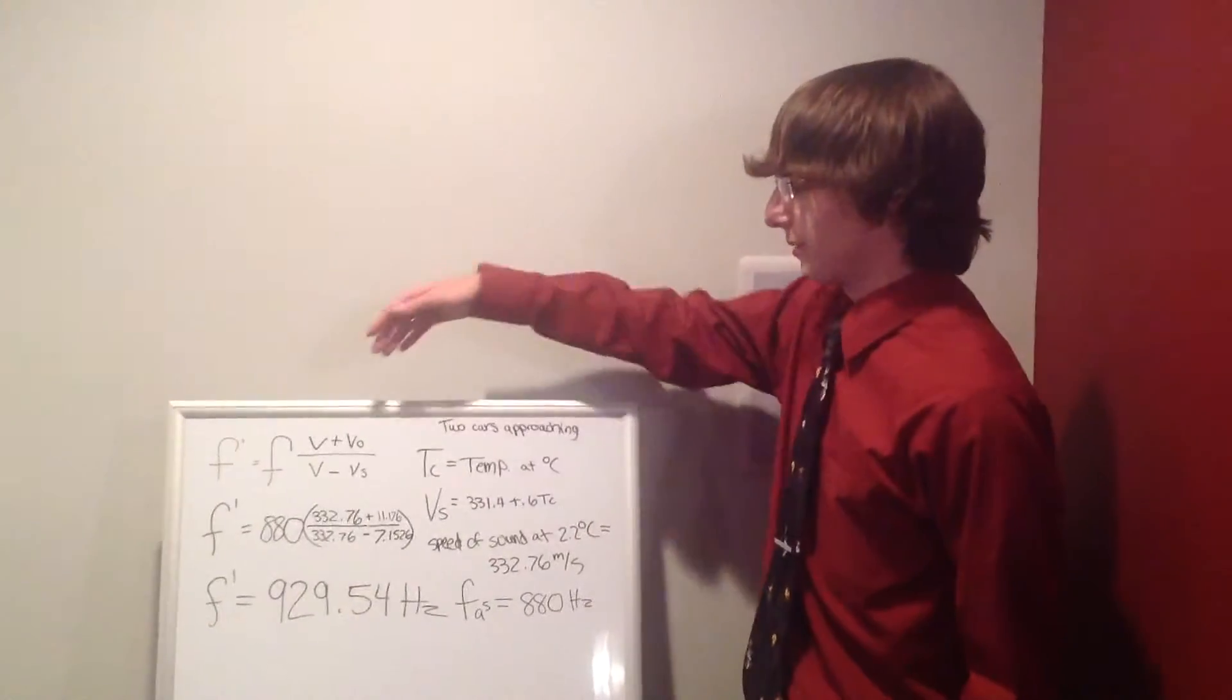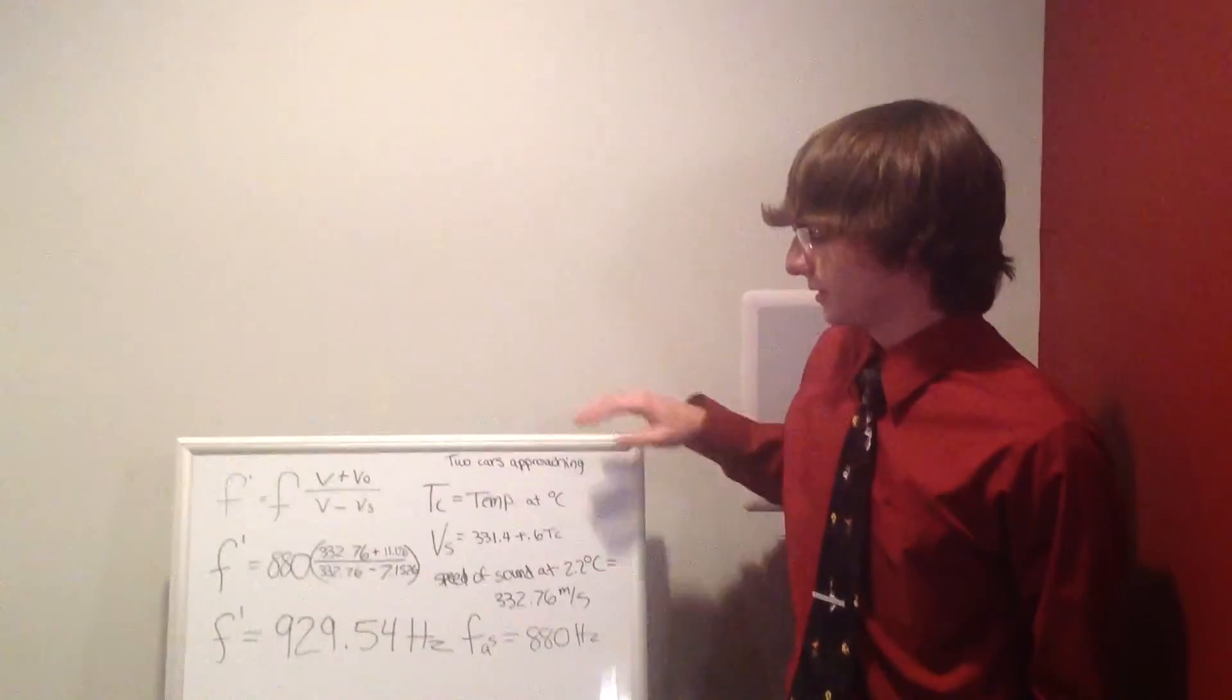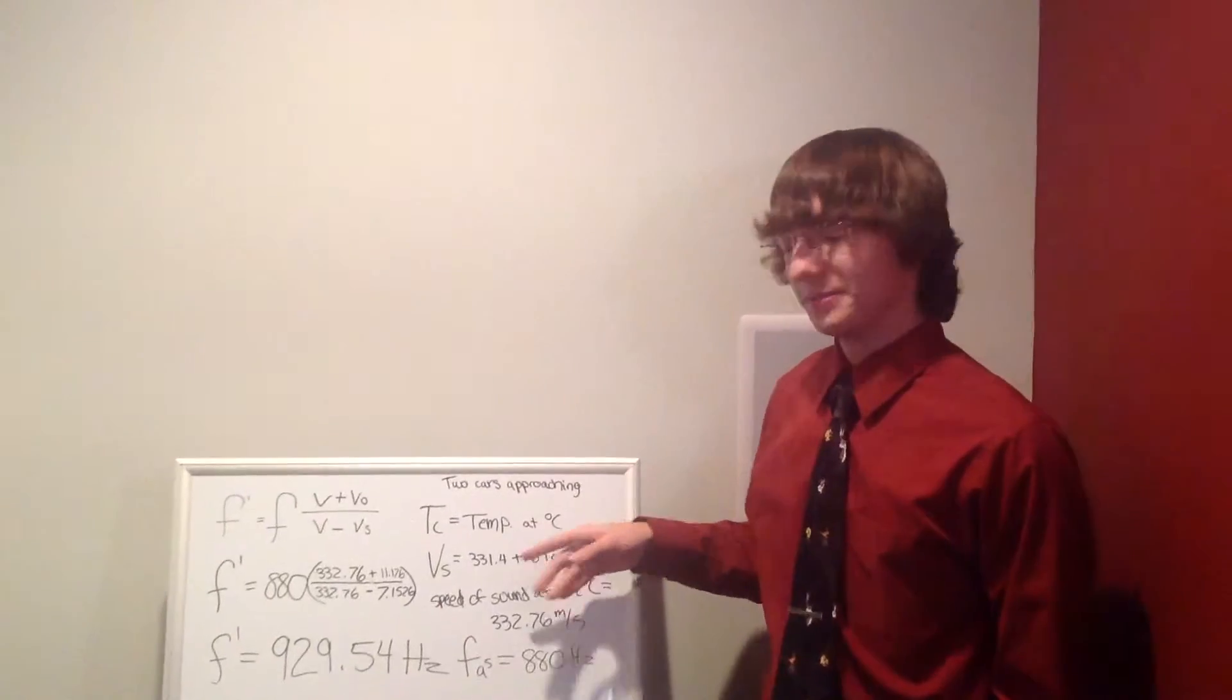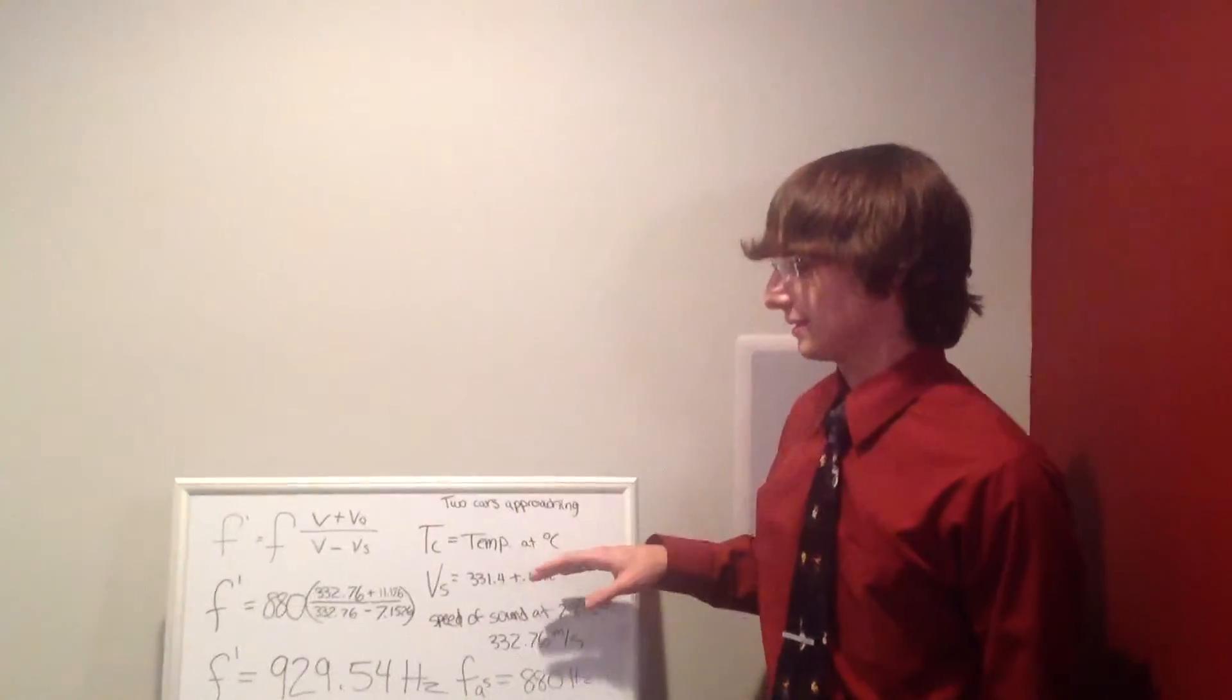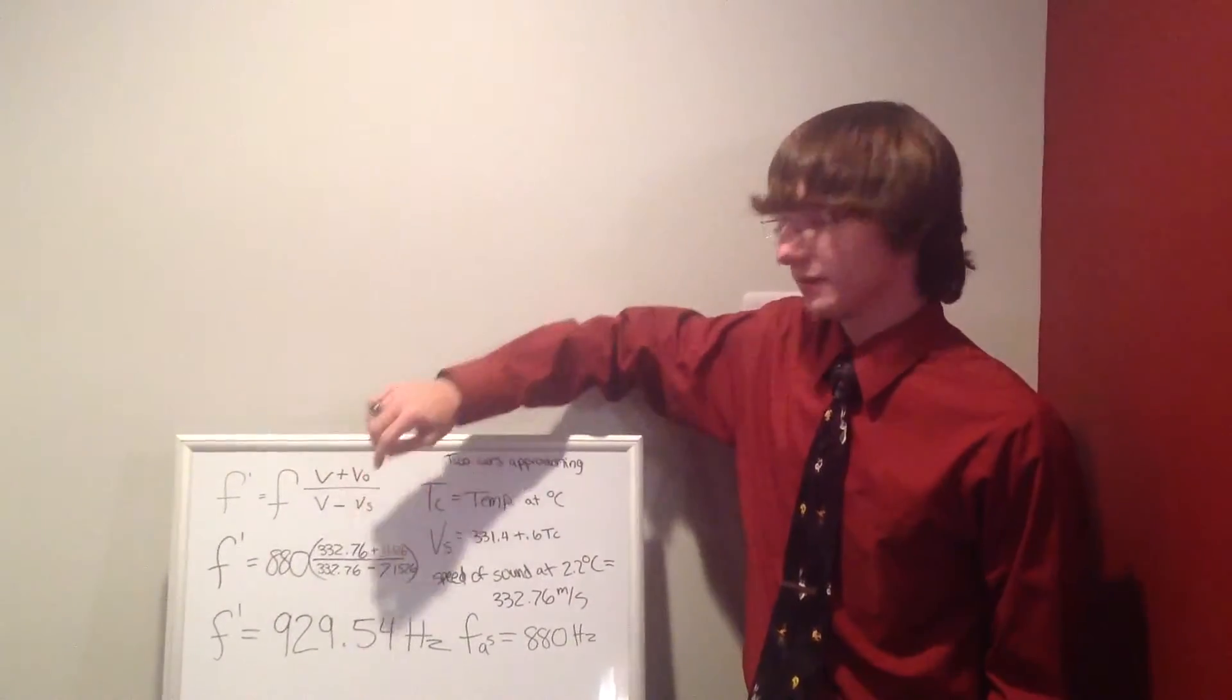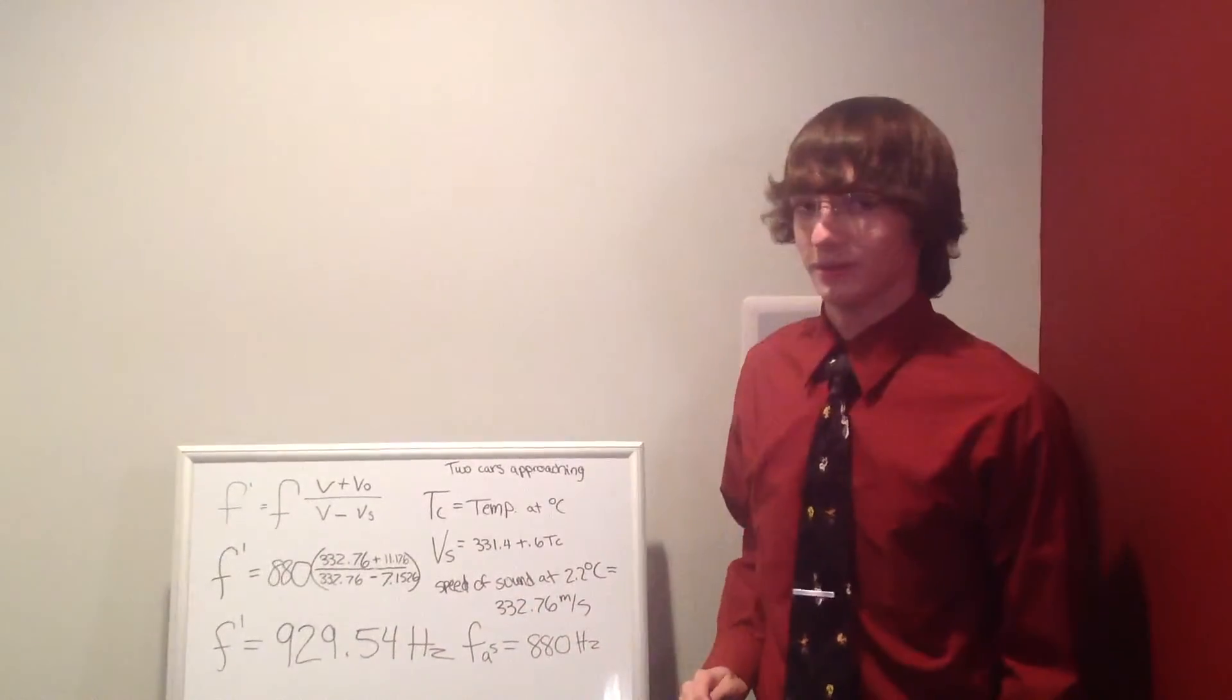Here we have the equation for two cars approaching each other. We are still using the same number for the speed of sound at 2.2 degrees Celsius. And we have a car going 25 miles per hour and a car going 15 miles per hour to get 929.54 Hertz.